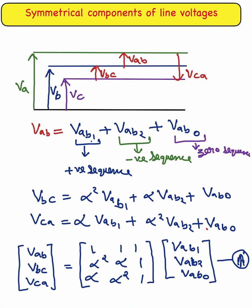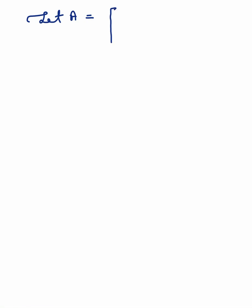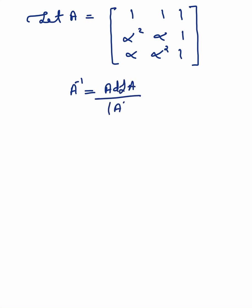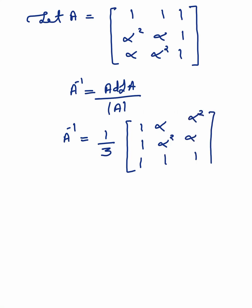Let us write this as equation number 1. Suppose matrix A equals [1, 1, 1; 1, α², α; α, α², 1]. Then A inverse equals adjoint of A divided by determinant of A. As calculated previously, A inverse equals (1/3) times [1, 1, 1; α, α², 1; α², α, 1].